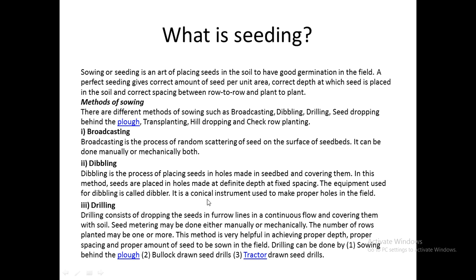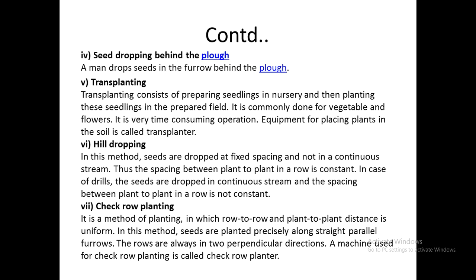Drilling is the process of dropping seeds in furrow lines which are dug out by the driller. Behind the driller there is a furrow closing device which closes the furrow after the seeds are placed. It can be done manually, using animal-drawn drillers, or it can be completely mechanized using tractor-drawn drillers. In seed dropping behind the plough, a driller is attached to a plough and as it makes a furrow and moves forward, a person behind places the seeds in the opened furrow.